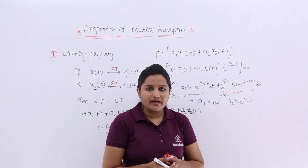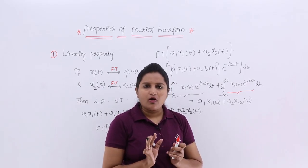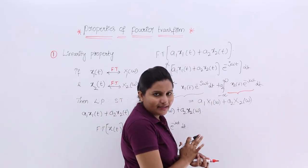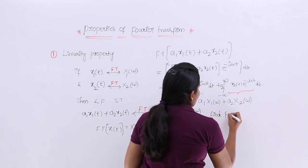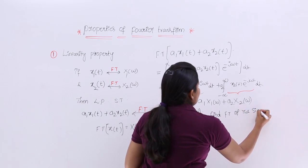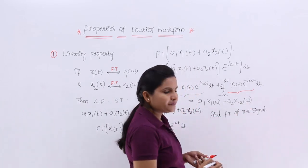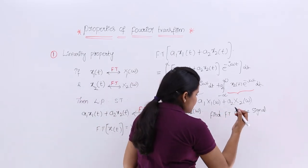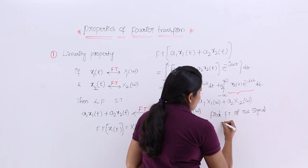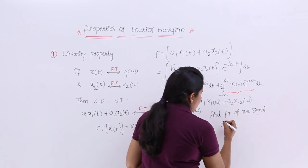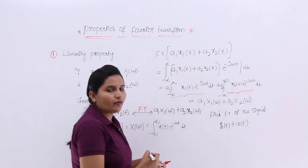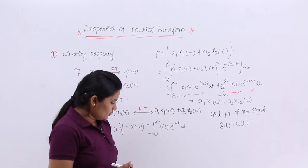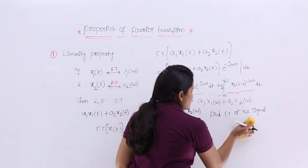I want to consider a problem to explain this linearity property. Find the Fourier transform of the signal x(t), which I want to define as δ(t) plus u(t) — that is, the delta function plus the unit step function.